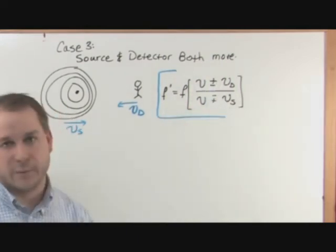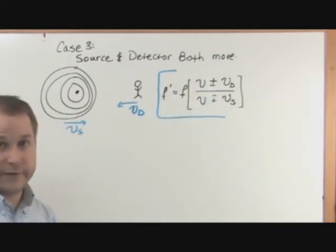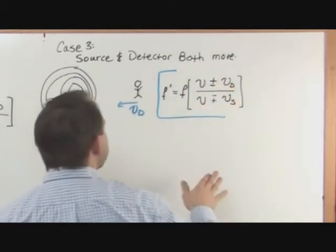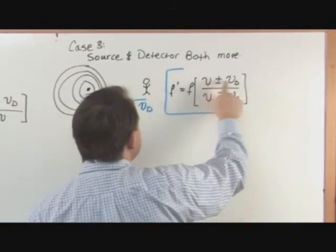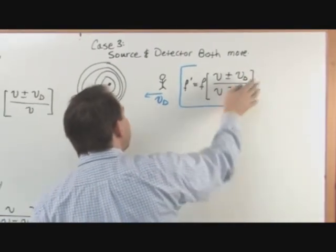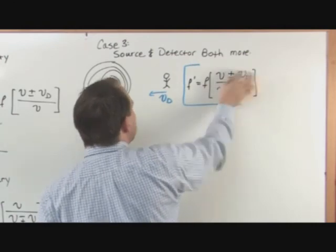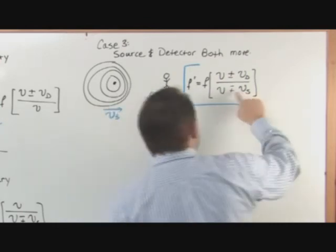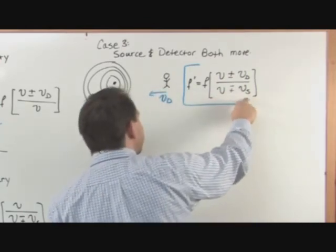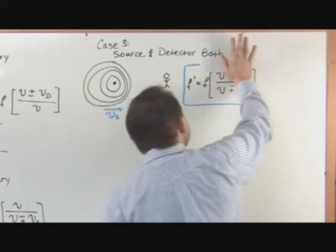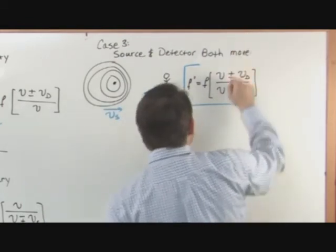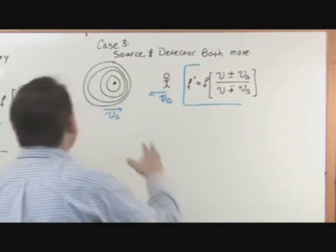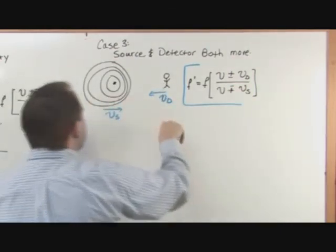In other words, and we'll do this as we do the problems. If you're trying to choose the sign in the top, I want you to pretend that the source, in other words, this is involving the detector moving. You have to pretend that the source is not moving at all as you make this decision. And then as you work on the bottom sign, where you're talking about the contribution of what's happening because the source is moving, you need to pretend that the detector is not moving at all to choose this sign.